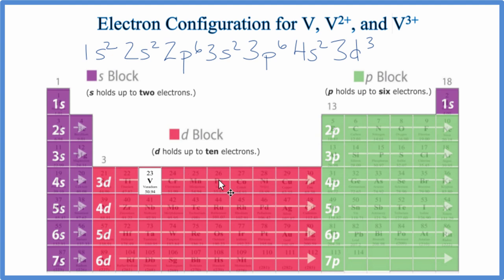When we're writing these electron configurations for these d block elements, normally it's a good idea to put the 4s after the 3d. It's a little bit more correct. It also shows us the 4s electrons are the first ones that are going to be removed when we form ions.